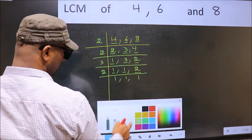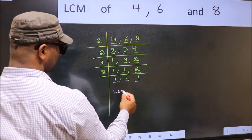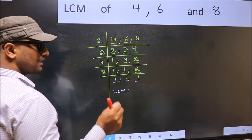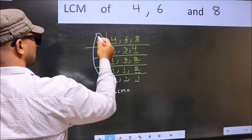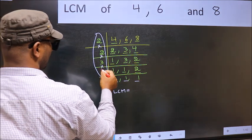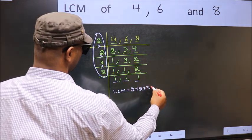So we got 1 in all the 3 places. So our LCM is, LCM is the product of these numbers. That is 2 into 2 into 3 into 2.